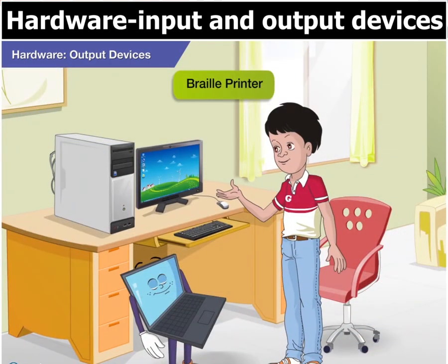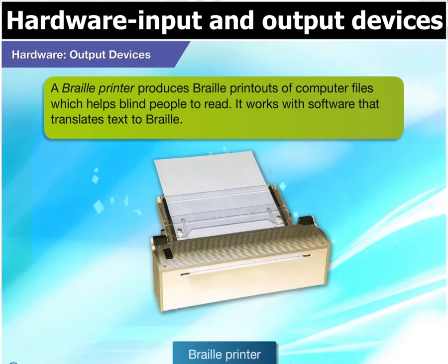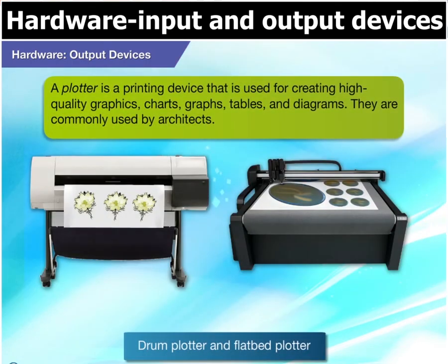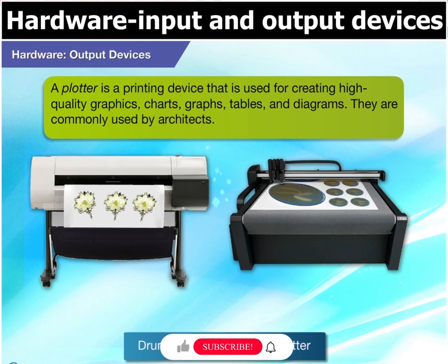What's a Braille printer, Toggle? A Braille printer produces Braille printouts of computer files which helps blind people to read. It works with software that translates text to Braille. A plotter is a printing device used for creating high quality graphics, charts, graphs, tables and diagrams. They are commonly used by architects.